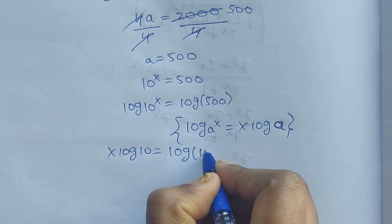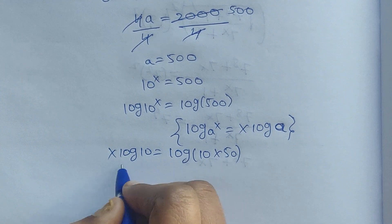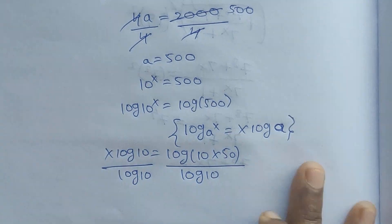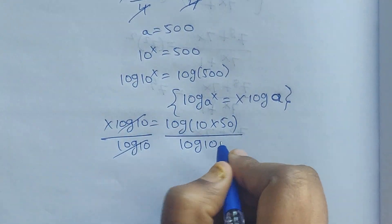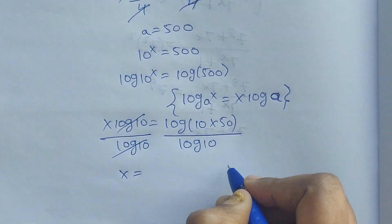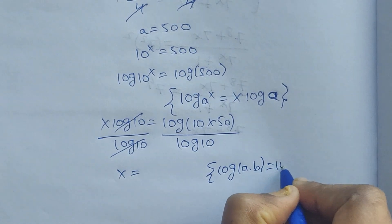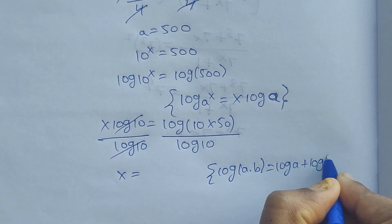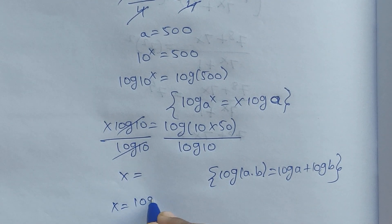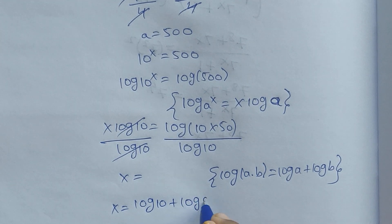We can write 500 as 10 times 50. Dividing both sides by log 10, the log 10 terms get cancelled. Now x equals log of 10 times 50. Using the formula log(a times b) equals log a plus log b, we can write x equals log 10 plus log 50.